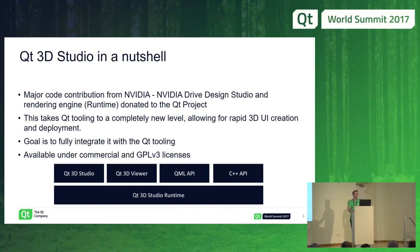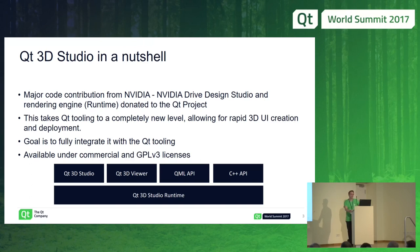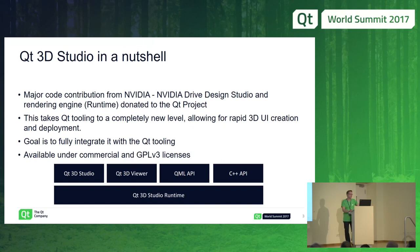Qt 3D Studio consists of several components. There's the Studio, which is the editor you use to create the 3D user interface. Then there's a viewer component — basically a player application — that you can use to see the UI in action, both on desktop and on a target device. There's also a remote deployment possibility so you can immediately see how the UI looks on the target device. There's also a QML API and a C++ API for integrating the 3D Studio UI into your application, and underneath there's the runtime component, which is essentially a 3D engine.